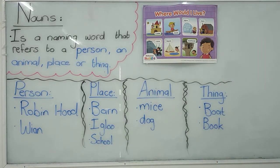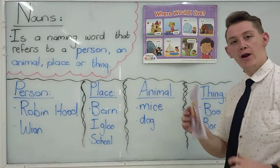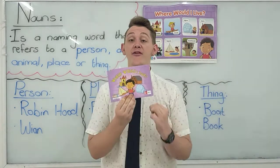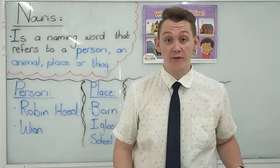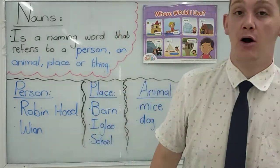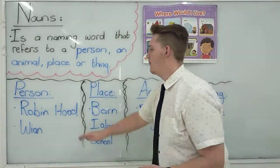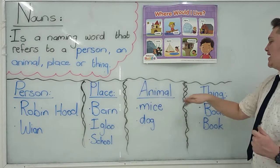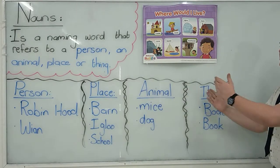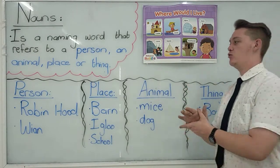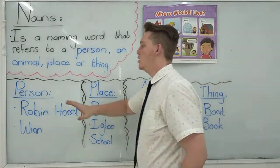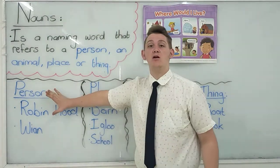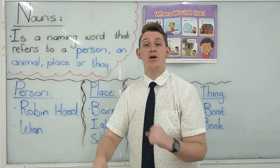Now in our book, 'Where Would I Live?', we have a lot of nouns. We have person, place, animal, thing. So in this book, let's start with person.